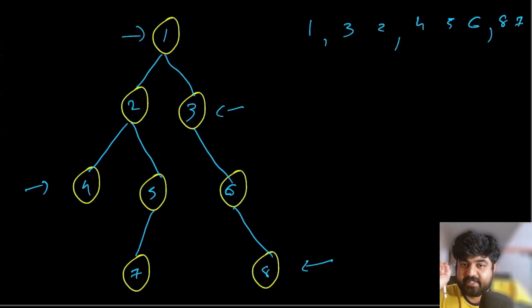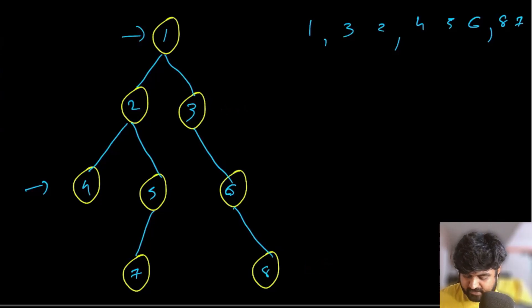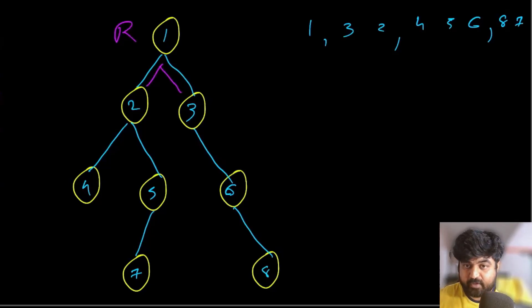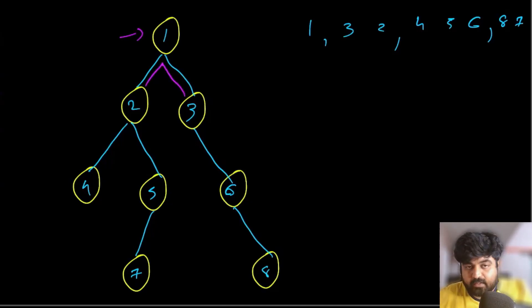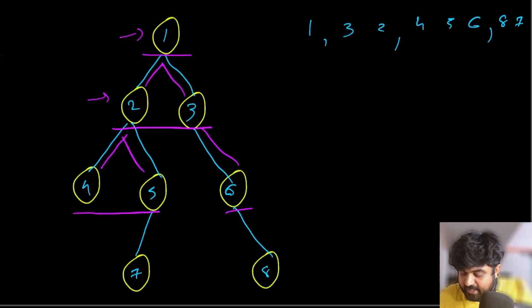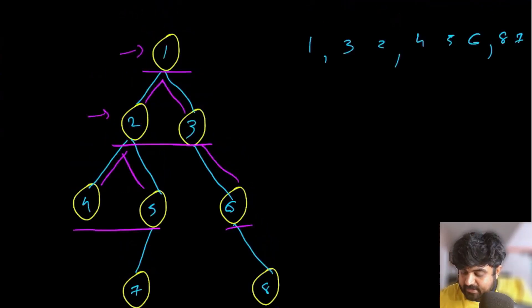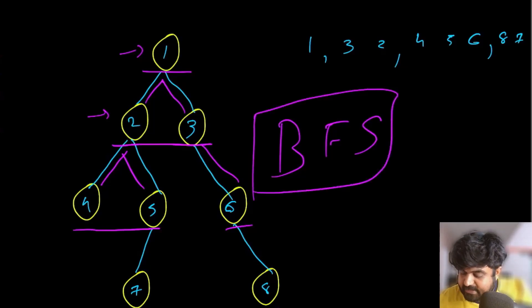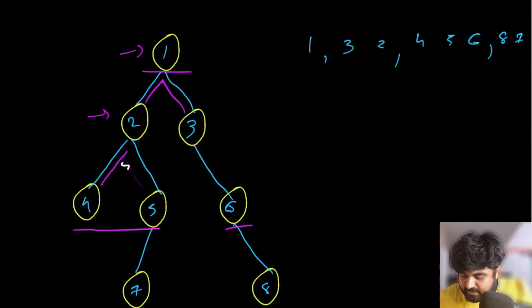To achieve zigzag level order traversal, we first need to understand simple level order traversal. In BFS, we iterate the parent before iterating its children, and children before grandchildren. This is best achieved using Breadth First Search, which is the standard way to do level order traversal in trees.